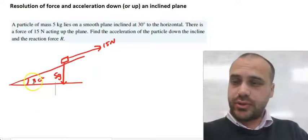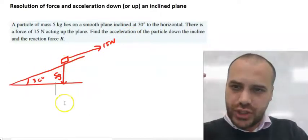Alright, so here's my inclined plane, 30 degree angle, 15 newtons acting up it and 5g down.